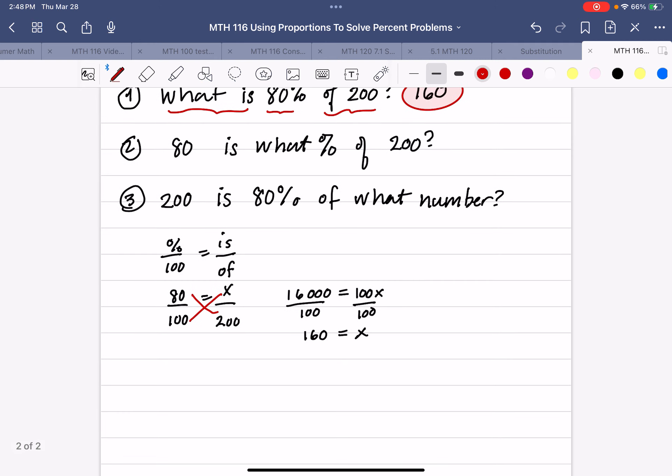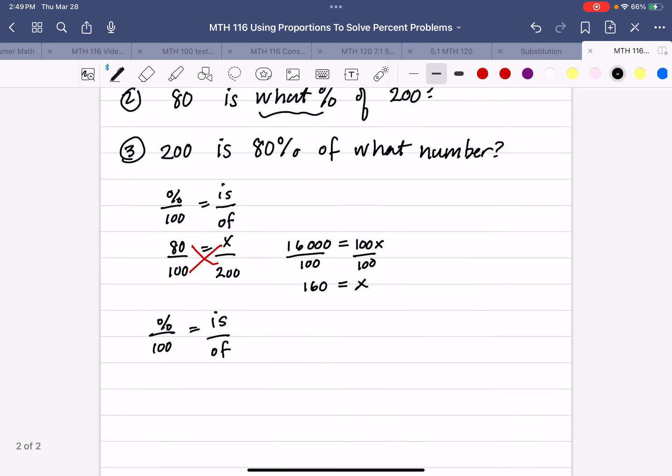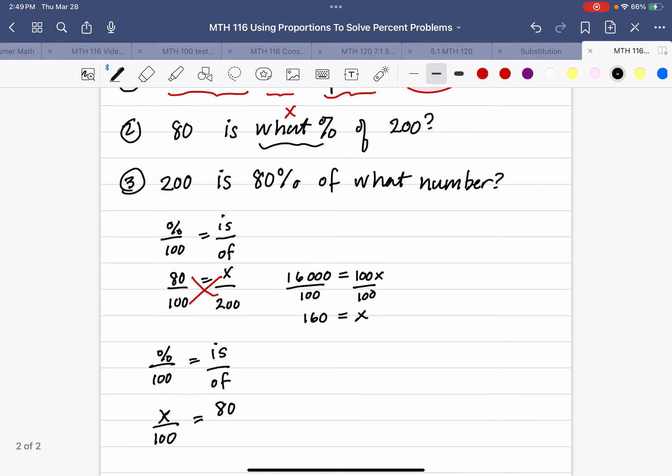Now, the second one, we're going to do the same way. We're going to do percent over 100 equals is over of. And this time, look where the word what is. Put my x with the percent. So, I'm going to put x over 100 equals 80, because that's attached near the word is, and the after of is 200.